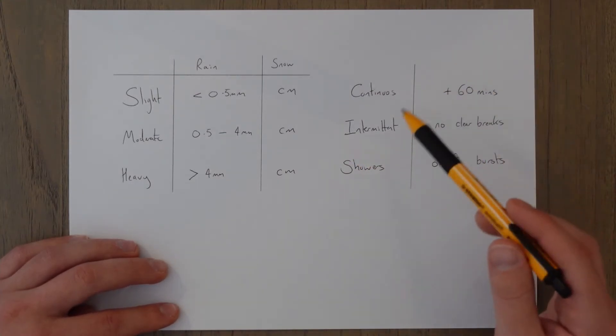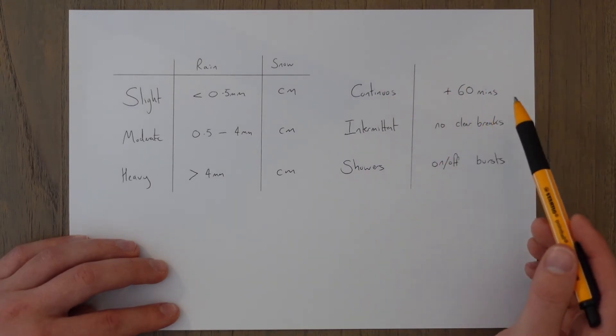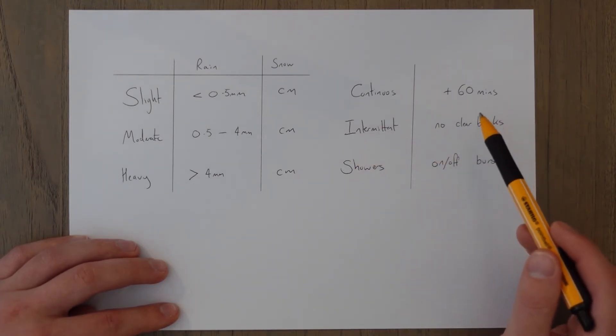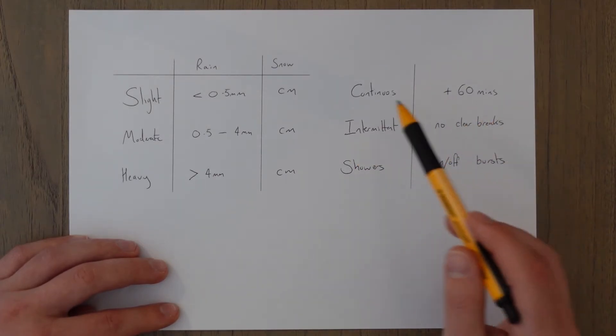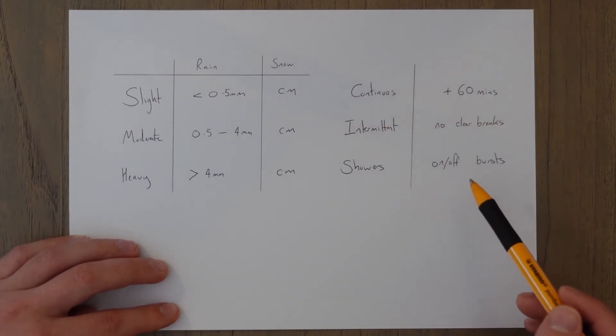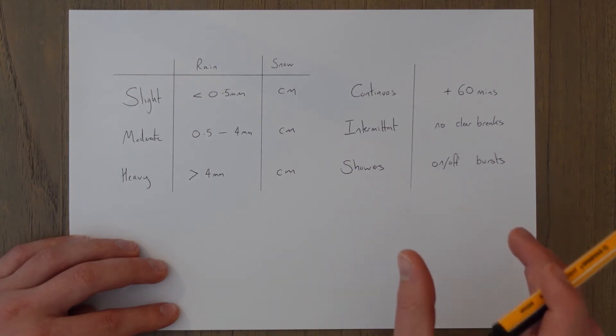The duration of the precipitation is described in terms of continuous which means it lasts more than 60 minutes. Intermittent which would mean in a 60 minute period there's no real clear breaks but it's not continuous the whole time. Or shower which is just on off in blocks of time with clear gaps of when there's no precipitation and clear gaps where there is precipitation.